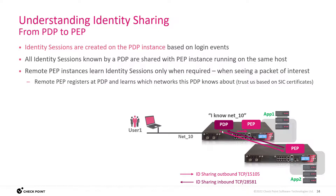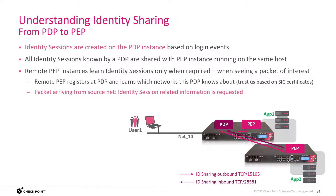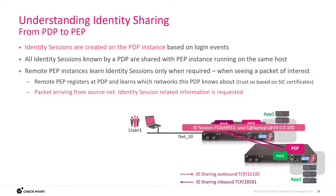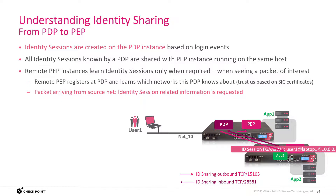Two TCP connections are involved in identity sharing when the enforcement point is remote to the decision point. The connection using TCP port 28581 is used to register to the PDP, and the PDP then tells which network this PDP is responsible for. The PEP keeps track of that table. When a packet of interest arrives at the security gateway, the PEP looks at the source IP address and asks the PDP responsible for that network if an identity session for this source IP is available. If it is, the identity session is shared with the enforcement point, which can then apply the security policy.